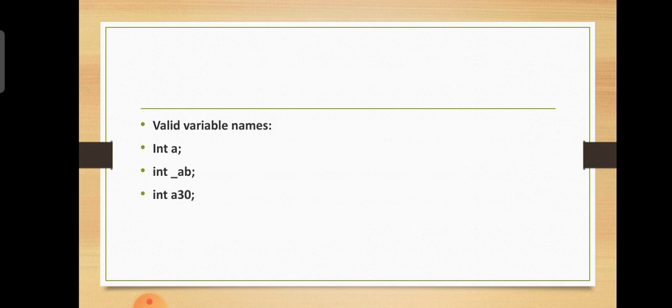For example, valid variable names are possible. Invalid variable names — for example, 'A B' with a space — this is not possible.